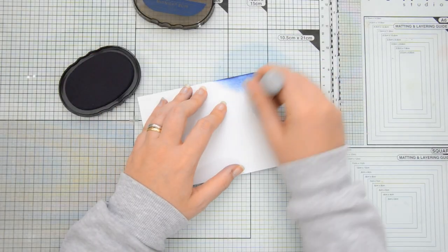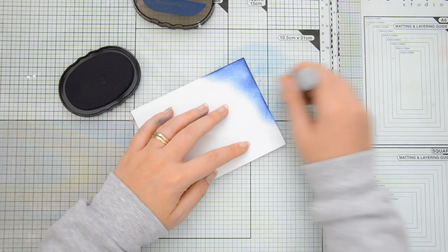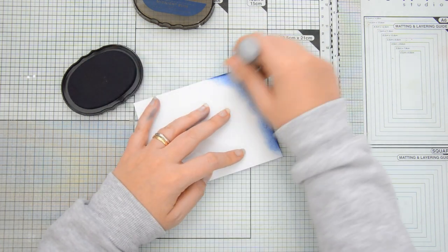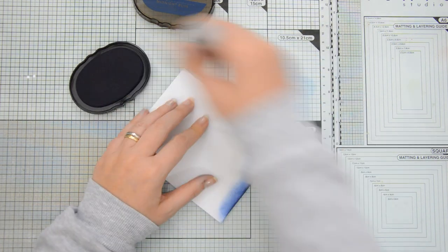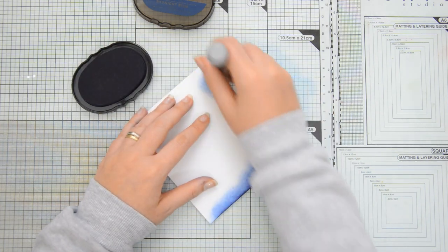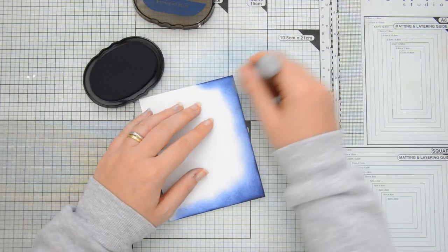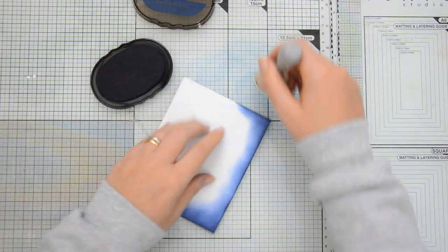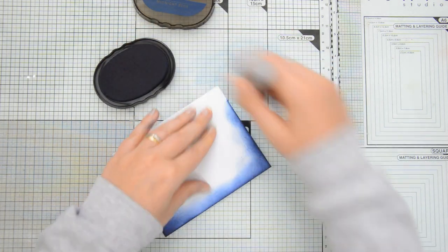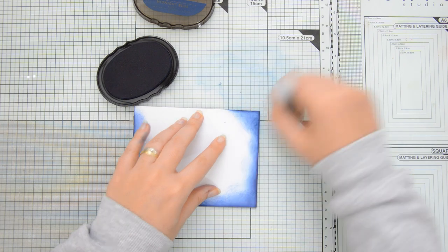For my second card I used a landscape orientation and I also changed my color palette. I started by ink blending a pre-cut card front using my scrapbook.com premium hybrid ink in the color midnight blue again using my domed ink blenders.